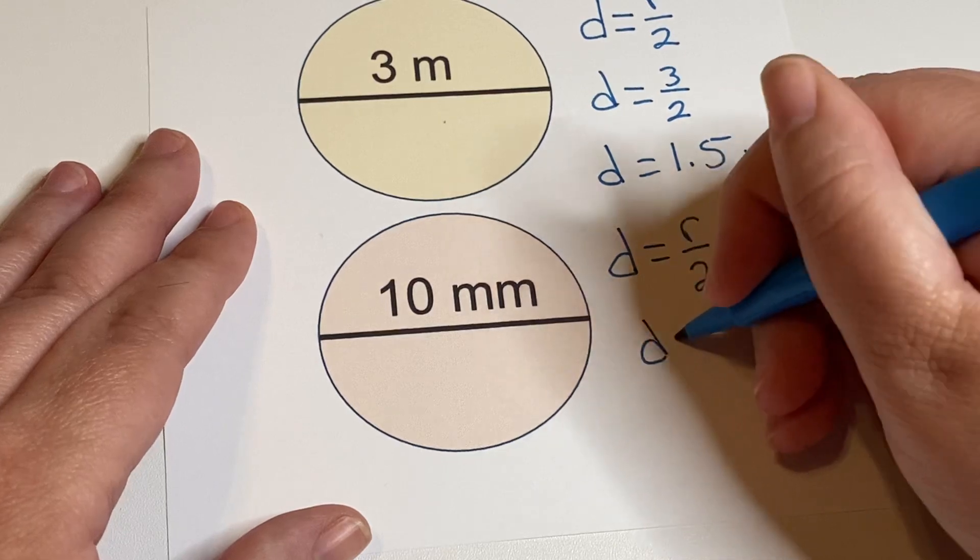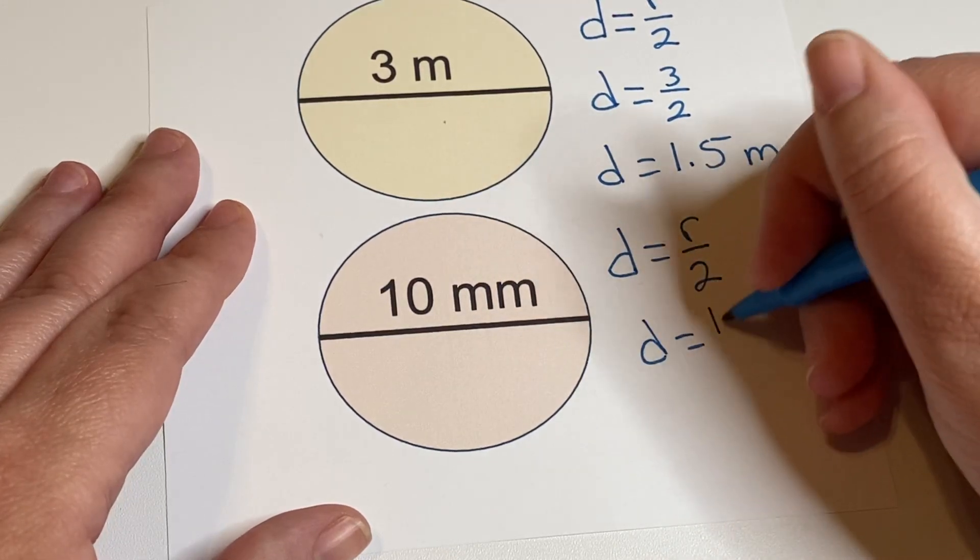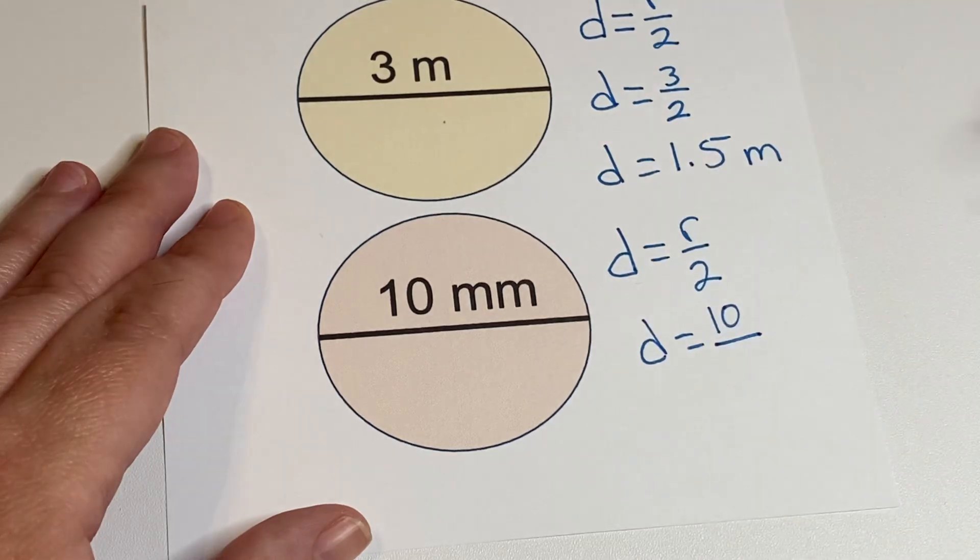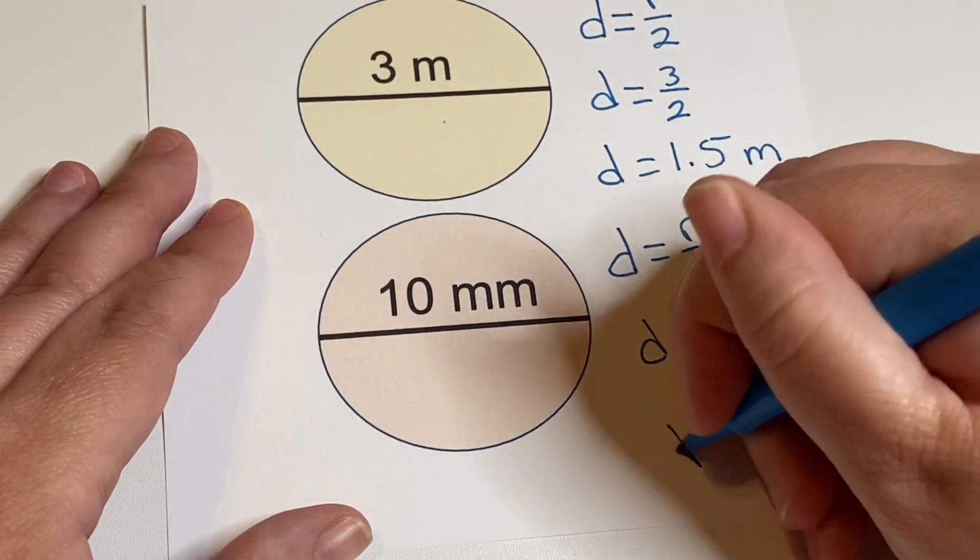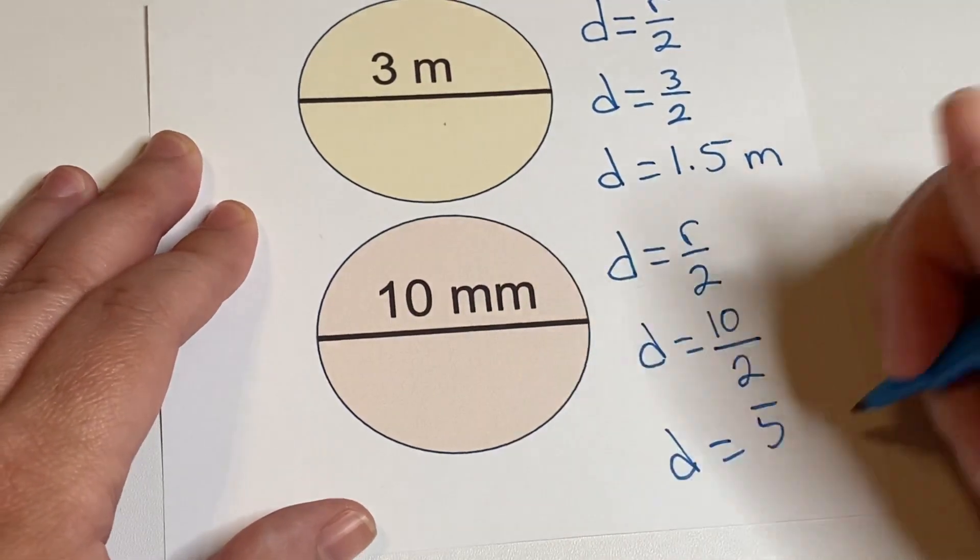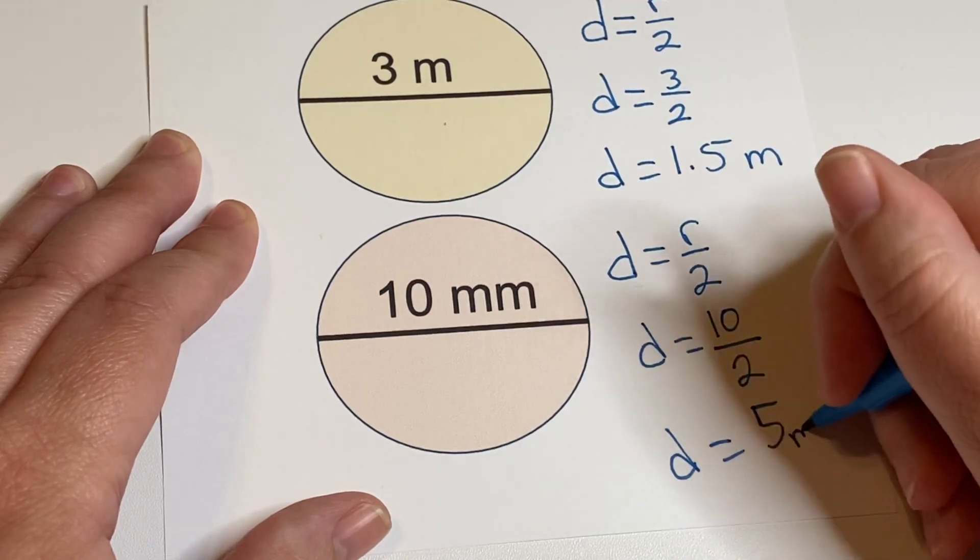And then I'll just show you that the same thing is going to happen here. We put in 10 for our radius. Take out the r. Divide by 2. And d equals 5 kilometers.